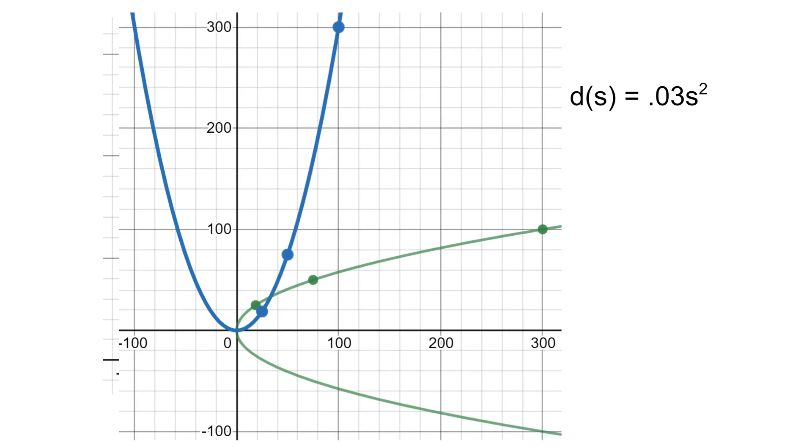So is that inverse, that green graph, a function? And we can see if we draw a vertical line, it crosses twice at several different places. Therefore, it's not a function.